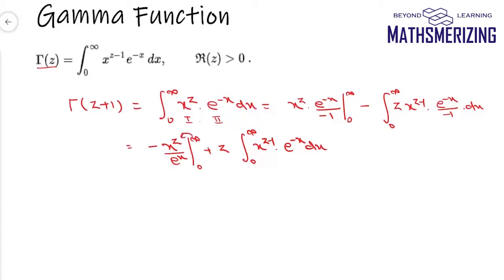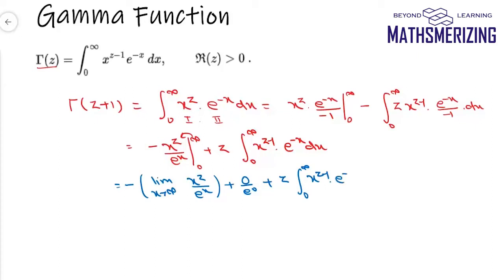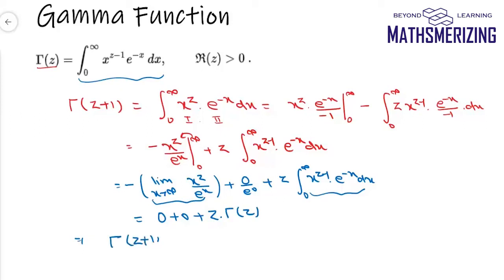Now I'll substitute the limits. As x tends to infinity, the limit of x to the power z over e to the power x is 0, and at x equals 0 the term is 0 over e to the power 0, which is also 0. So we get 0 plus 0 plus z times the integral from 0 to infinity of x to the power z minus 1 times e to the power minus x dx. That integral is nothing but gamma(z), so the formula is gamma(z+1) equals z times gamma(z).